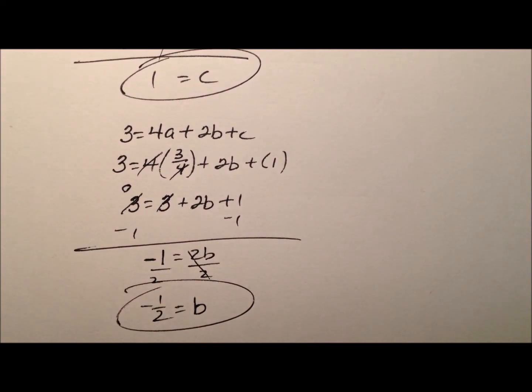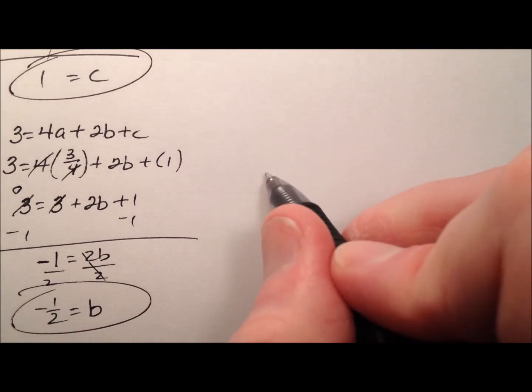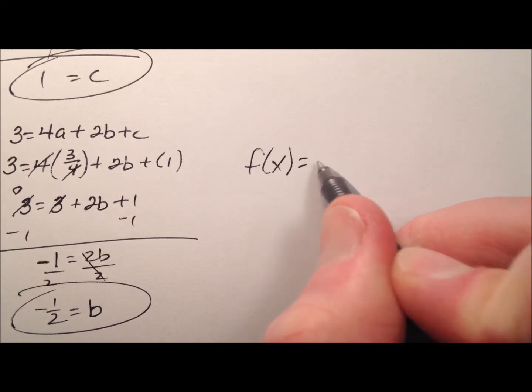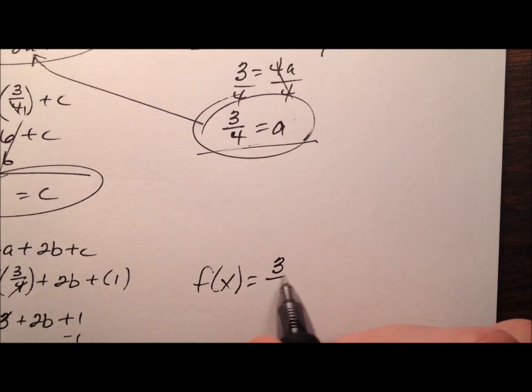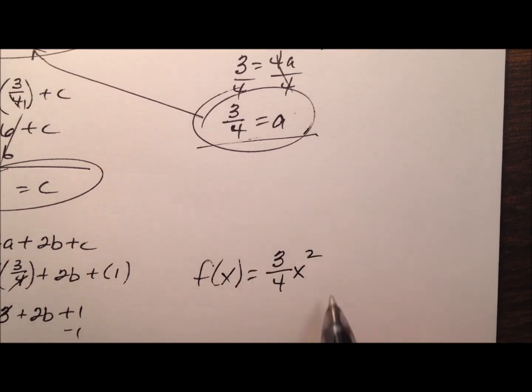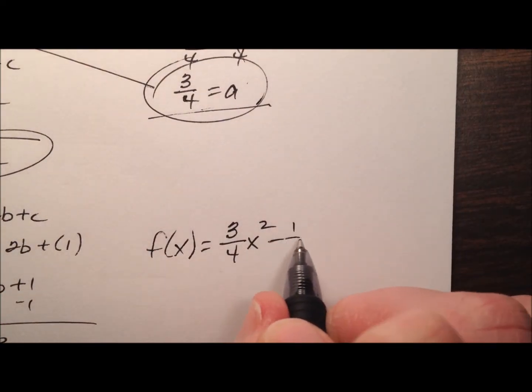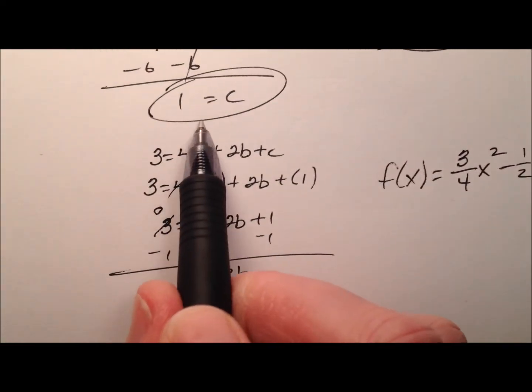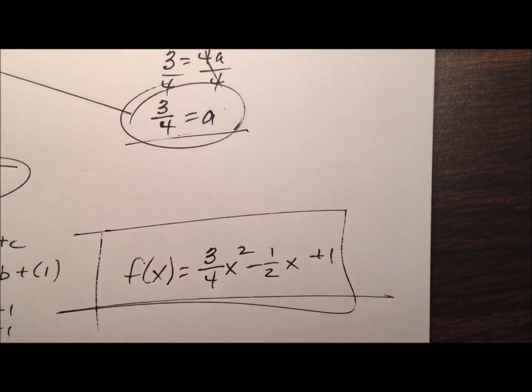So I now have all three of my coefficients that I'm looking for: a, b, and c. So let's put it all together. My function f of x equals ax squared. My a was 3 fourths, so 3 fourths x squared plus bx. And my b is negative 1 half, so minus 1 half x. And then plus c, which is positive 1. So right there.